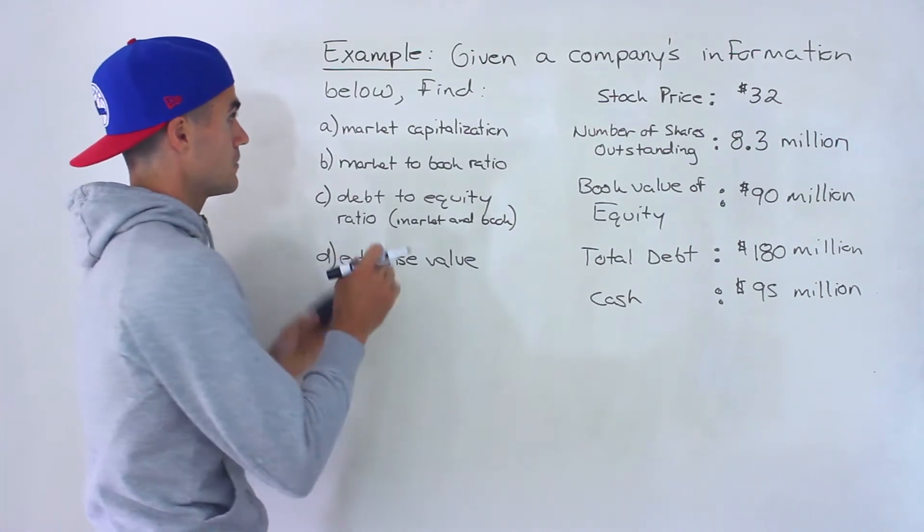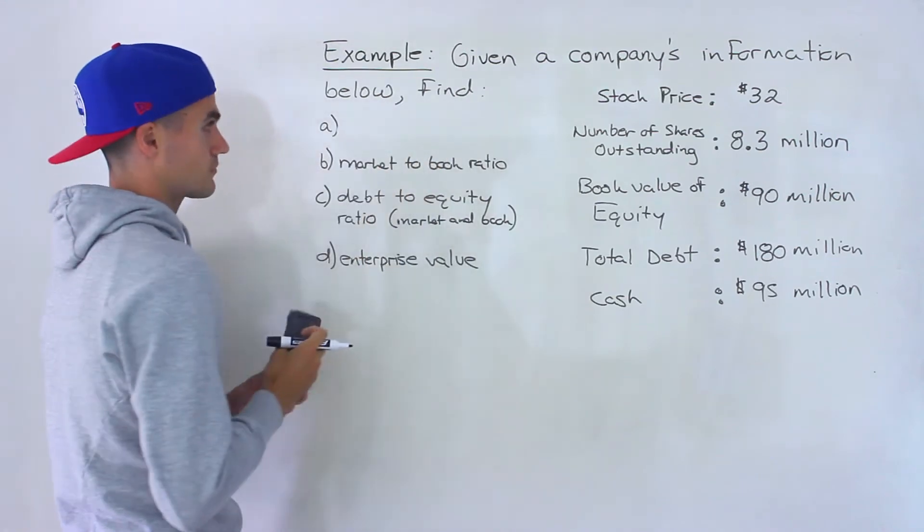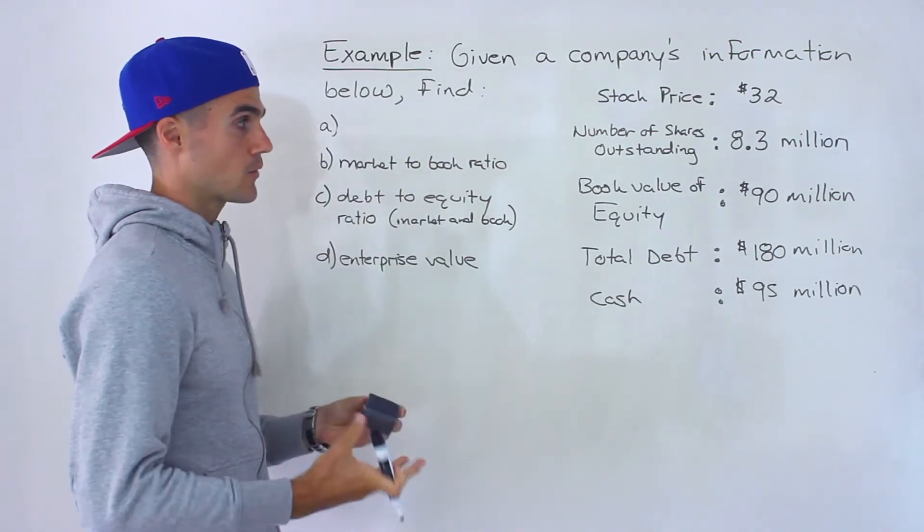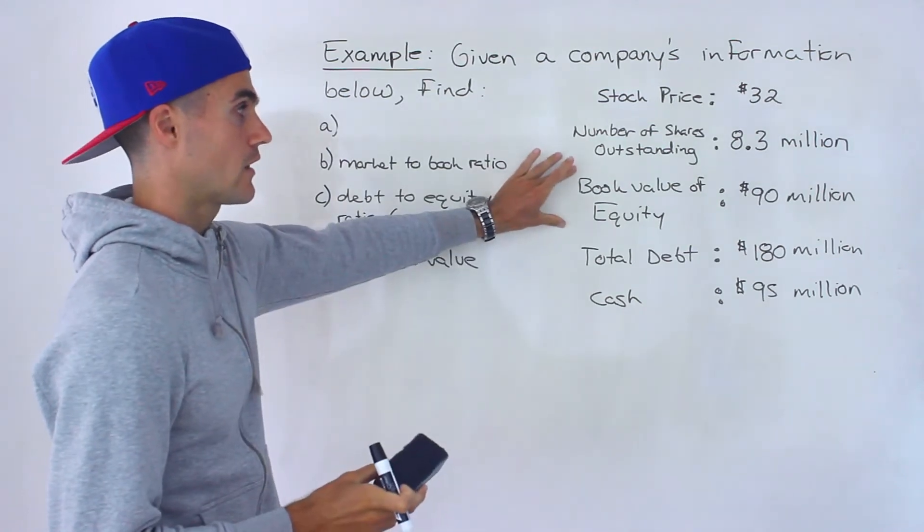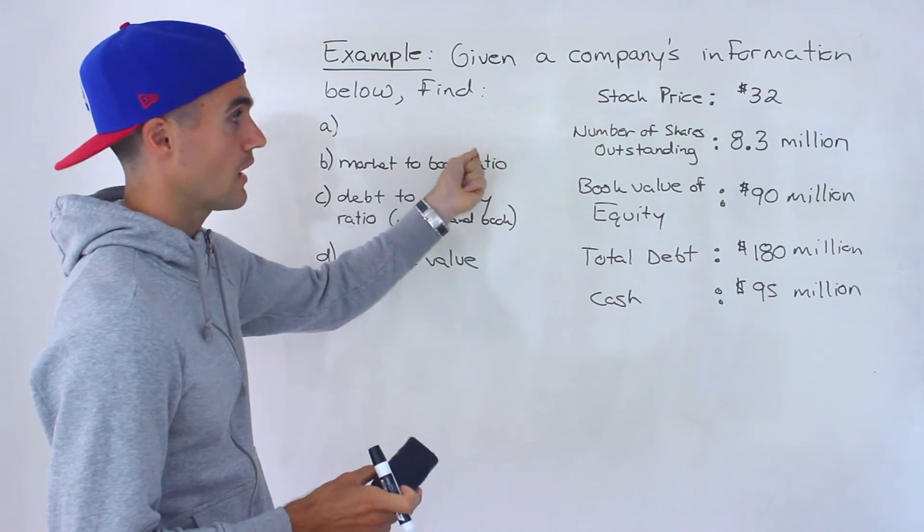So starting with the market capitalization, I'm just going to erase this here. I'll put the whole calculation. That's the market value of the equity. Notice we're given the book value of the equity. We're not given the market value of the equity, the market cap. So we have to calculate that.